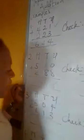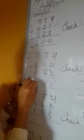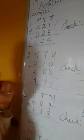I have 510 plus 488. Let's solve this. 0 plus 8 is 8, 1 plus 8 is 9, 5 plus 4 is 9.